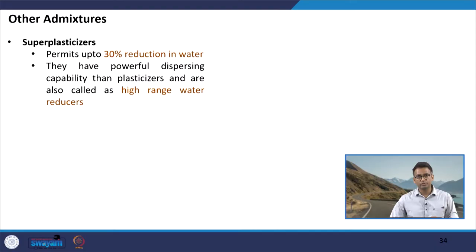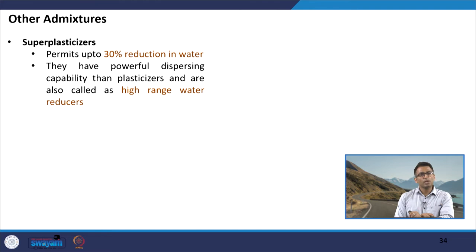Other than plasticizers, we also have superplasticizers. These are more popularly used today because of their additional advantages. Superplasticizers provide higher reduction in water content — up to 30 percent. They have a powerful dispersing capability; the mechanism is the same as for plasticizers, but they are more powerful.